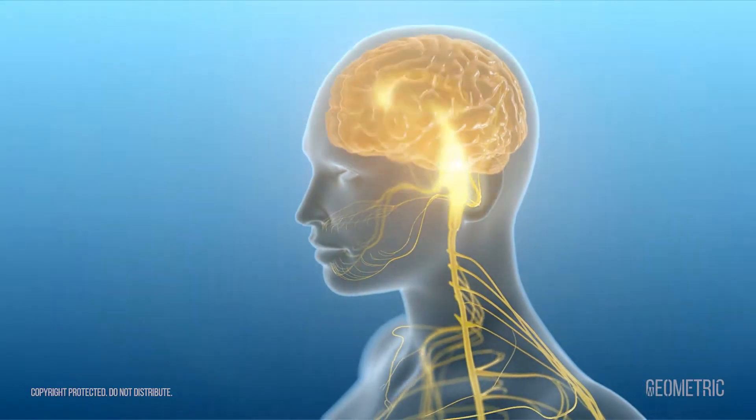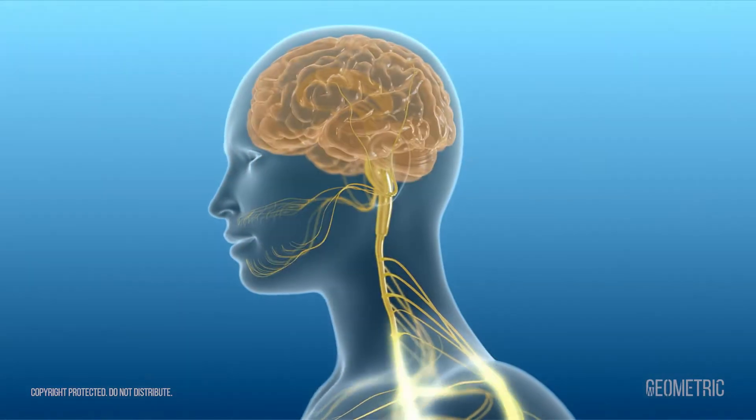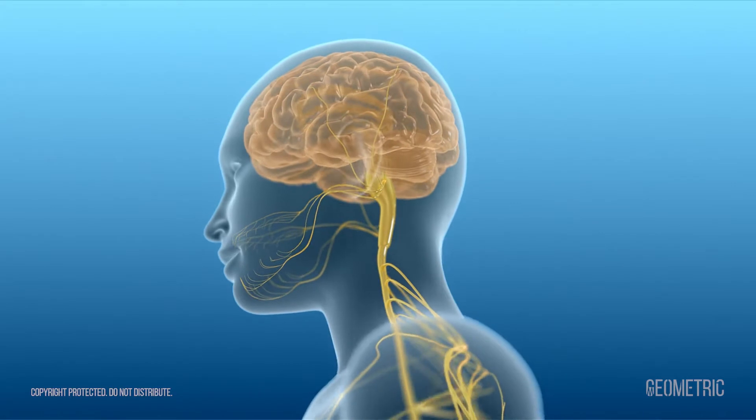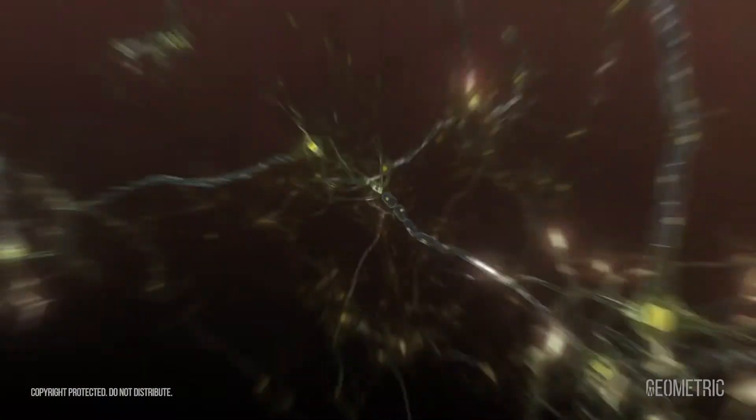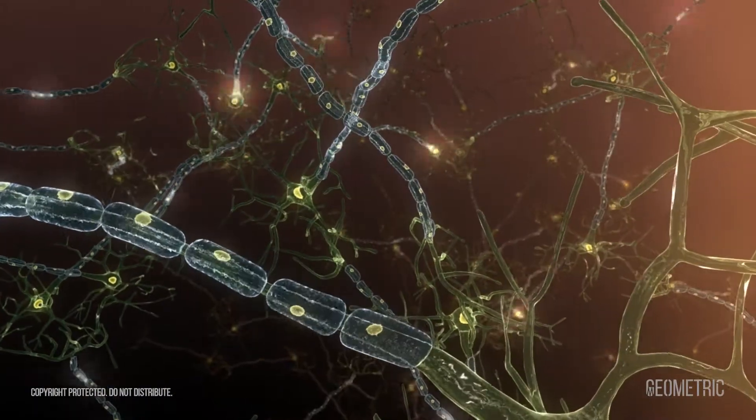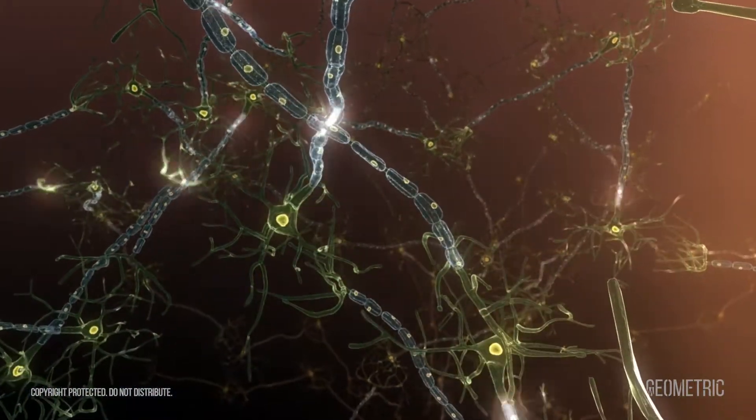Multiple sclerosis or MS is a progressive disease of the central nervous system in adults, affecting around two and a half million people worldwide. MS affects the ability of nerve cells in the brain and spinal cord to communicate with each other effectively.